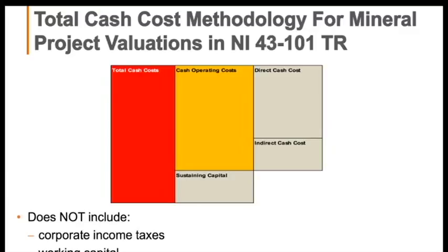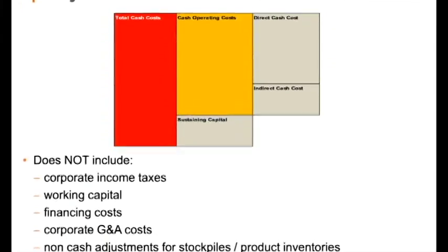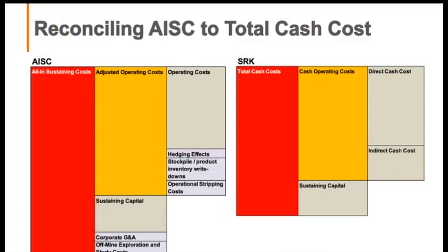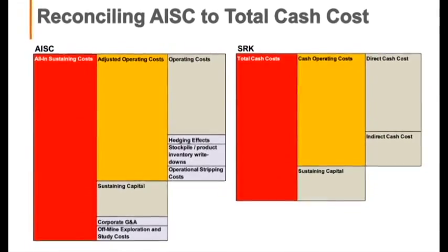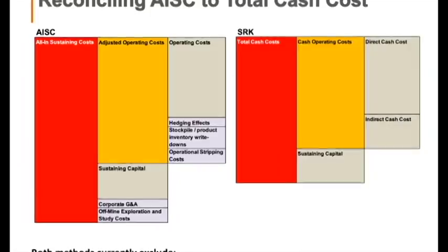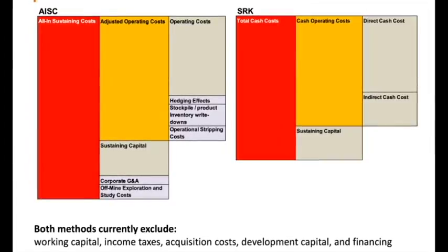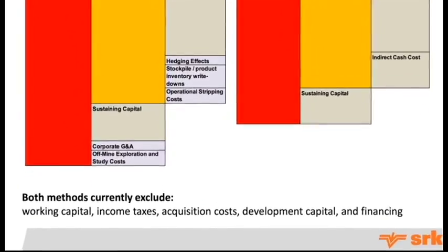To reinforce Mark's point: these frameworks do not include corporate income taxes, working capital, financing charges, or corporate G&A — all the non-cash adjustments necessary to get to a financial statement view. In the SRK total cash concept, cash operating costs plus sustaining equals total cash. The World Gold Council's adjusted operating cost adds hedging and stockpile adjustments to get to operating cost, then adds sustaining plus corporate G&A and off-mine expenses to get all-in sustaining costs.